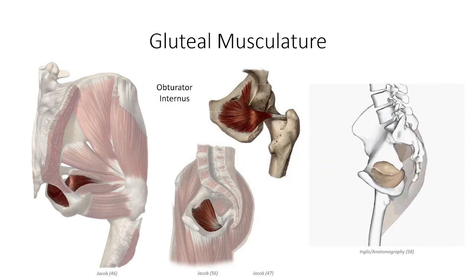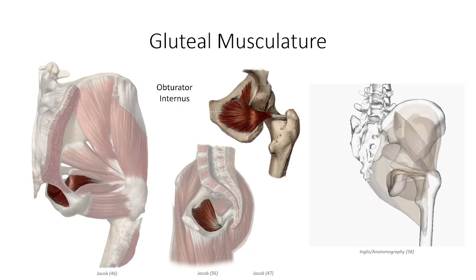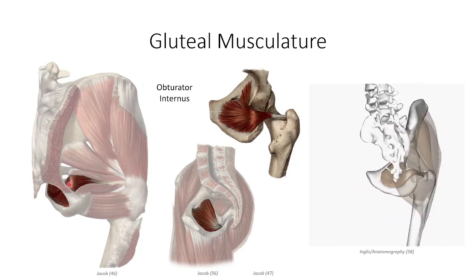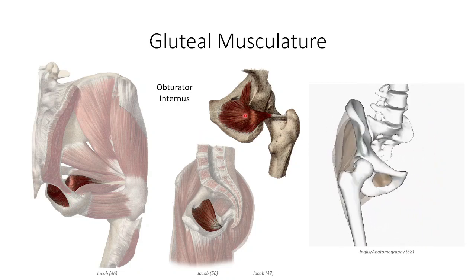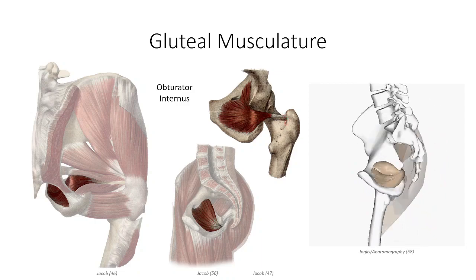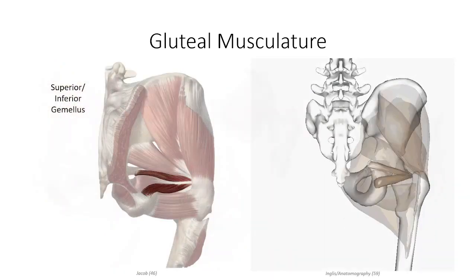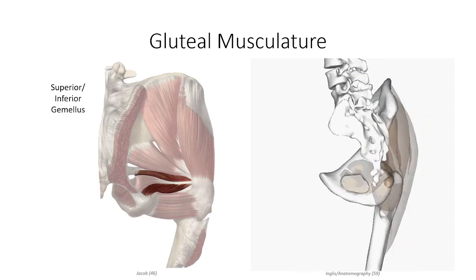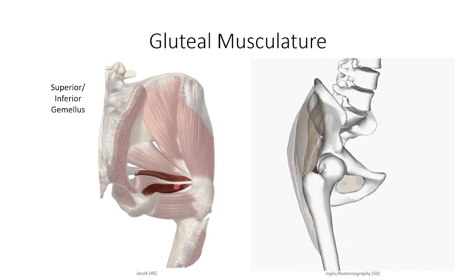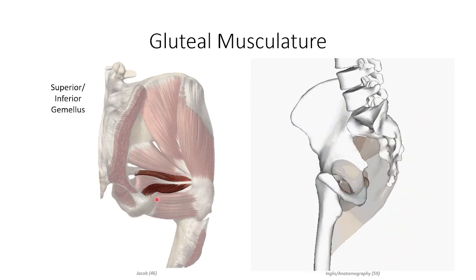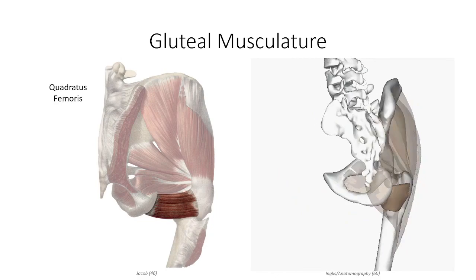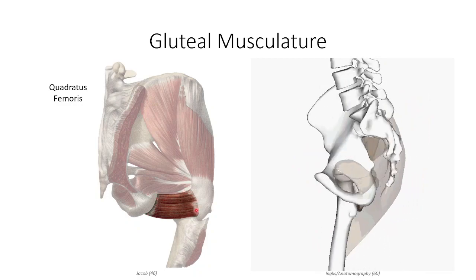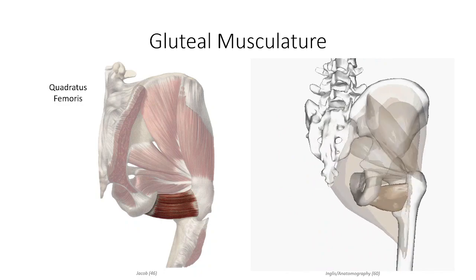The deeper muscles of the gluteal region include the obturator internus, which originates off the internal surface of the obturator foramen and membrane, winds posteriorly, and takes a 90-degree turn to insert on the trochanteric fossa along with the obturator externus. On its path it is joined by the superior and inferior gemelli — or twin muscles — which originate from the ischial spine and tuberosity superior and inferior to the obturator internus tendon. The last muscle in this group is the quadratus femoris, originating from the furrow between the ischial tuberosity and acetabular fossa to insert between the greater and lesser trochanters. Collectively, these muscles combine with piriformis to laterally rotate the hip.